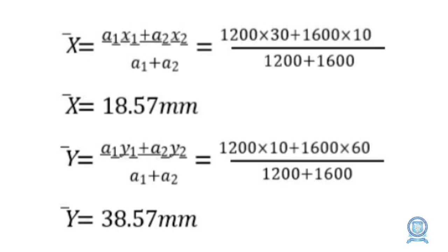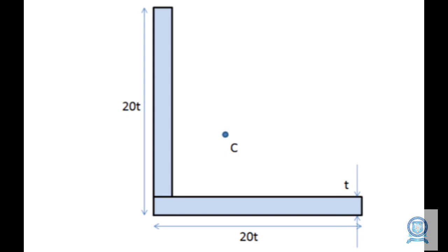After calculating all a1, a2, x1, x2, y1, y2 values, we substitute into the general formula. x̄ = (1200 × 30 + 1600 × 10) / (1200 + 1600) = 18.57 mm. ȳ = (1200 × 10 + 1600 × 60) / (1200 + 1600) = 38.57 mm. Marking x̄ = 18.57 and ȳ = 38.57 in the L section gives us centroid point C — this is the general location of the centroid for an L section.